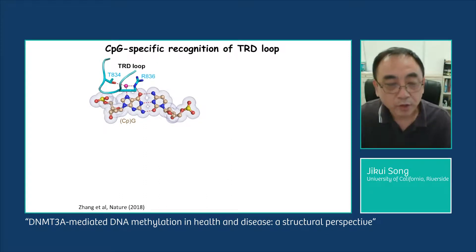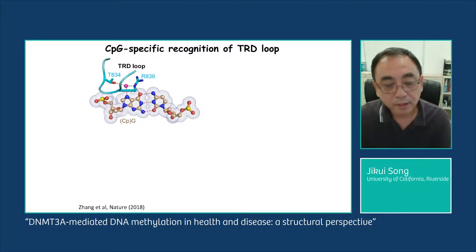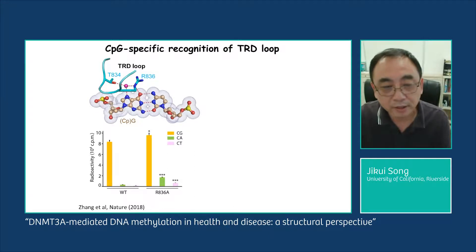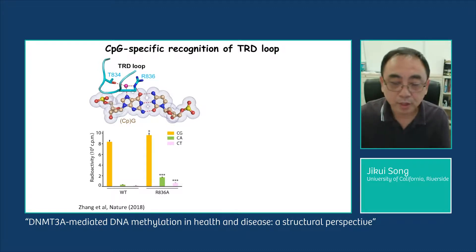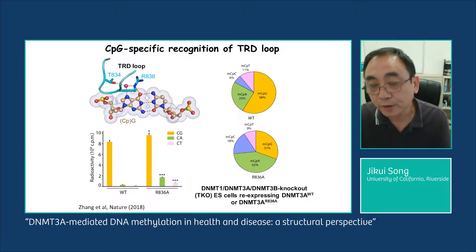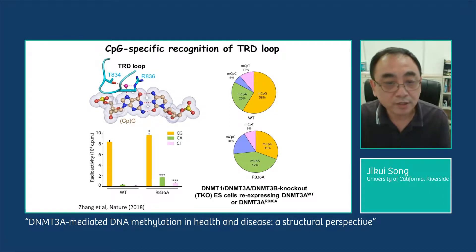Based on this structure, we also identified the mechanism of CpG recognition. Arginine 836 forms a hydrogen-bonding interaction with the CpG guanine. When we mutated this arginine to an alanine, this mutant exhibited enhanced methylation by DNMT3A at non-CpG sites. Consistently, transfection of this mutant into mouse embryonic stem cells with DNMT1, DNMT3A, and DNMT3B knockout showed that compared to wild-type DNMT3A, this mutant shifts methylation more toward non-CpG methylation, supporting the conclusion that Arginine 836 plays an important role in CpG specificity of DNMT3A.